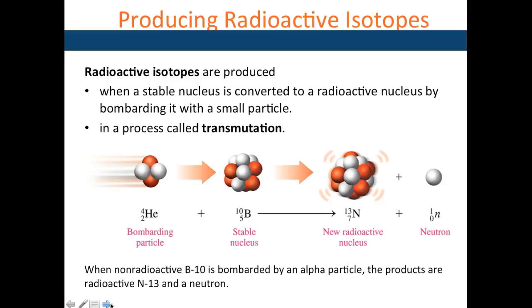Radioactive isotopes are produced when you have a stable nucleus that becomes radioactive when a small particle hits it or bombards it. This process of converting a stable nucleus into an unstable nucleus is called transmutation. You have boron-10 (5) - it's very stable because the number of neutrons and protons are equal. Then you bombard it with a helium particle and you get nitrogen-13 (7).